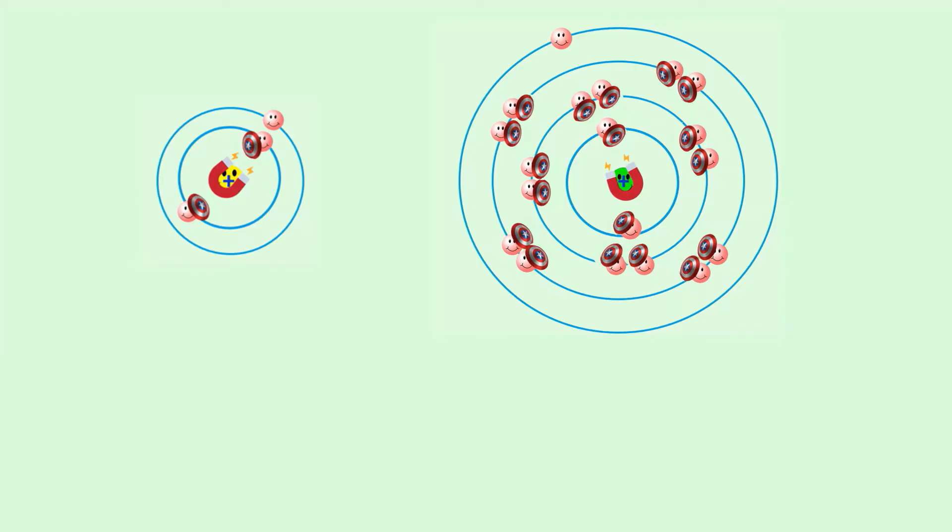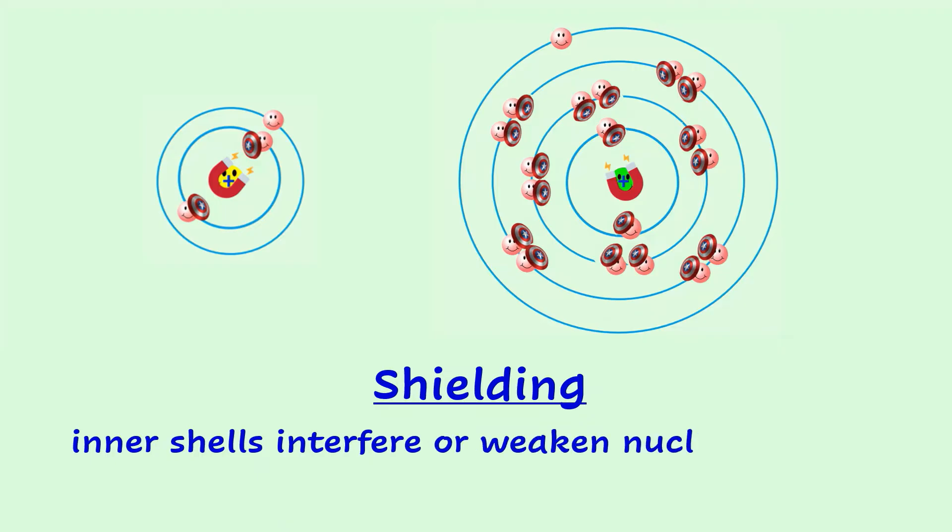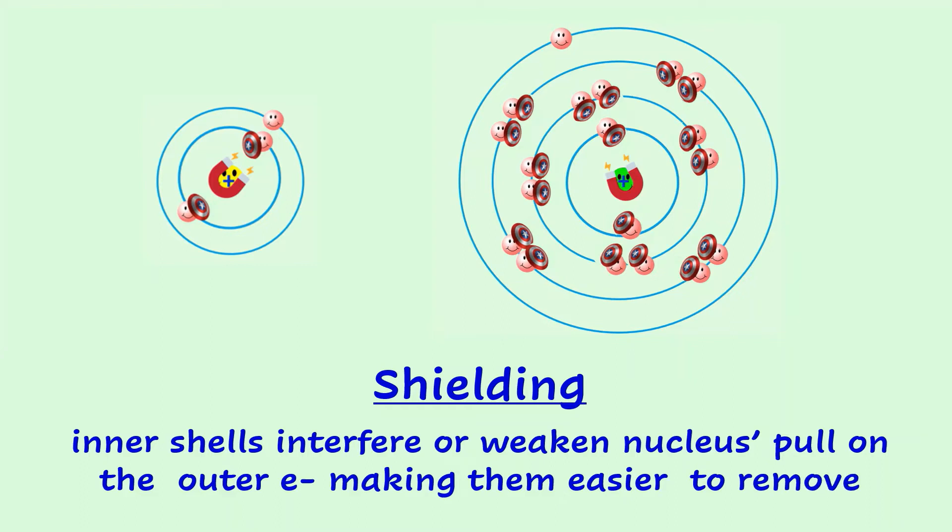This phenomenon is called shielding. It occurs when the inner shells interfere or weaken the nucleus's pull on the outer electrons, making them easier to remove. Francium's valence electron will experience more shielding being farther away in period seven, making its valence electron the easiest to remove of all the metals. That's why francium is the most reactive metal on the periodic table.